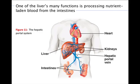One of the liver's many functions is processing nutrient-laden blood from the intestines. As shown in Figure 11, capillaries on the intestines converge to the hepatic portal vein, which leads to the liver. All nutrients absorbed by the intestine first make their way to the liver. The liver removes excess glucose from the blood and converts it to glycogen. Liver cells also synthesize plasma proteins important in blood clotting and osmotic balance, as well as lipoproteins that transport fats and cholesterol to body cells. The liver also modifies and detoxifies substances absorbed by the digestive tract before distributing them to the heart.